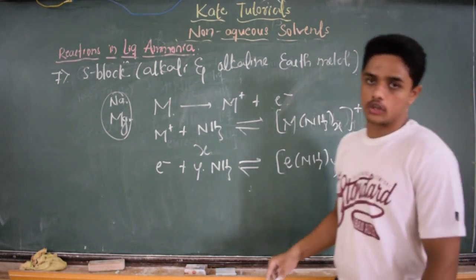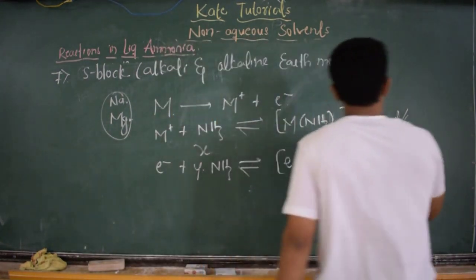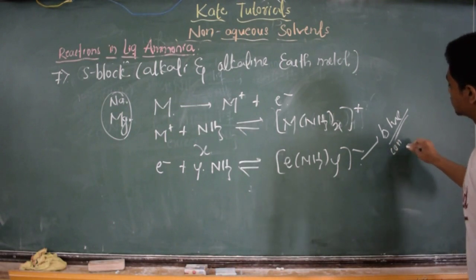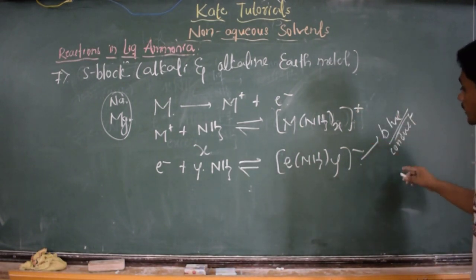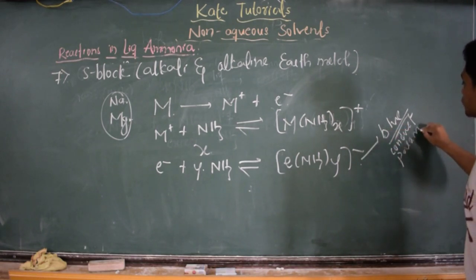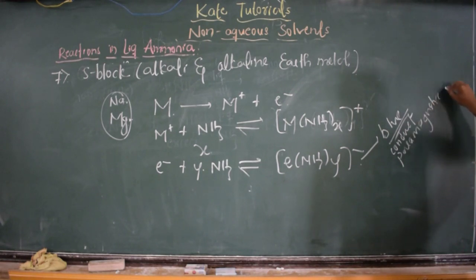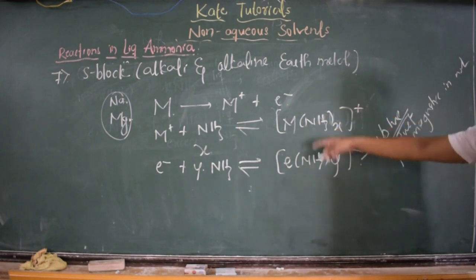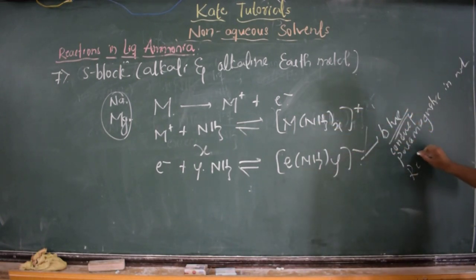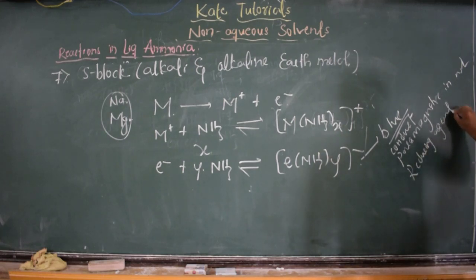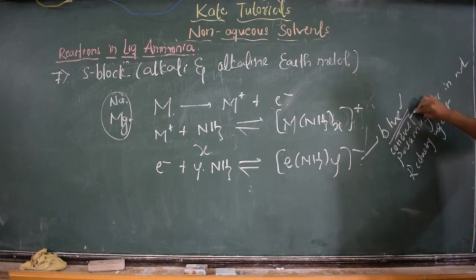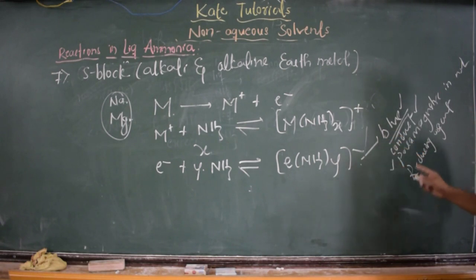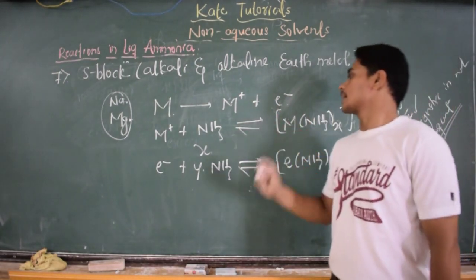Because of these electrons, the solution conducts electricity. It is blue in color, it is a good conductor of electricity, it is paramagnetic in nature, and the solution acts as a good reducing agent. These are the four properties when S-block metals are reacted with liquid ammonia.